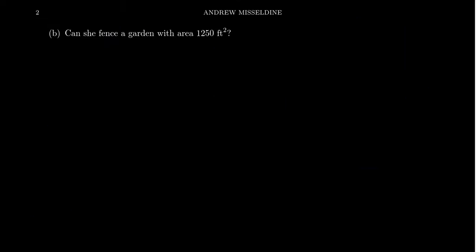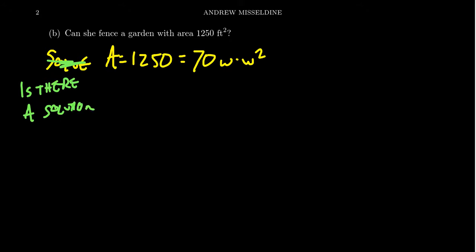Now for our gardener, we wonder, could she make a garden whose area is 1,250 square feet? What does that mean exactly? If we're trying to figure out is this an acceptable area, we're trying to solve the equation area equals 1,250 square feet, which we have as 70w minus w squared equals 1250. In terms of solving, we're just like, is there a solution?